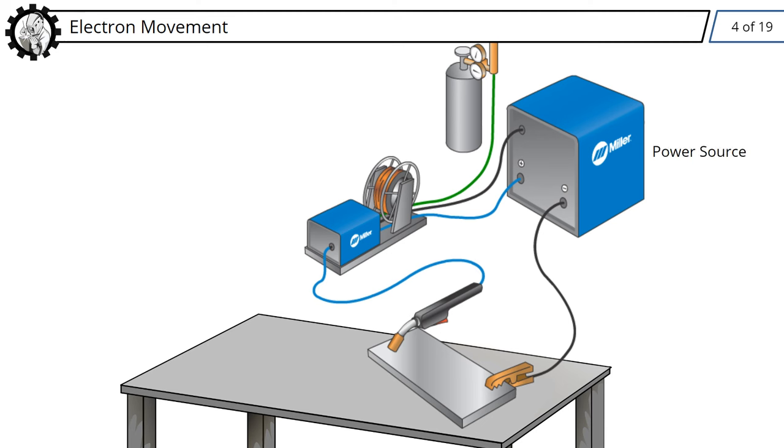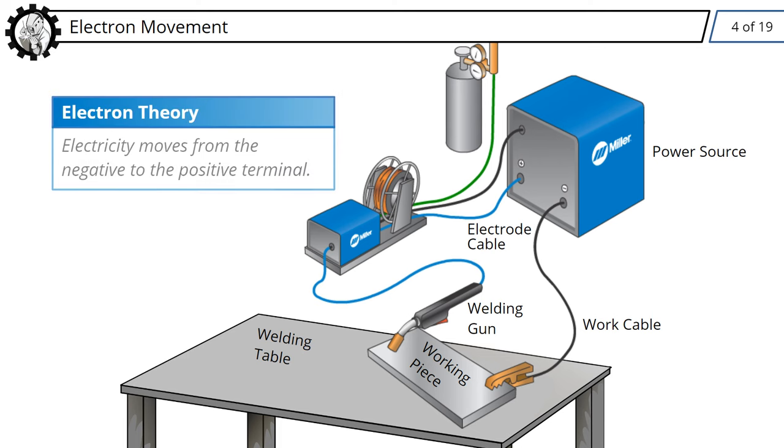Welding setups include a power source, cables, the welding gun, welding table, and the piece you're working on. Welding uses electron theory, which states that electricity moves from the negative to the positive terminal on the power source. This is an important concept as we explore concepts related to welding polarity.